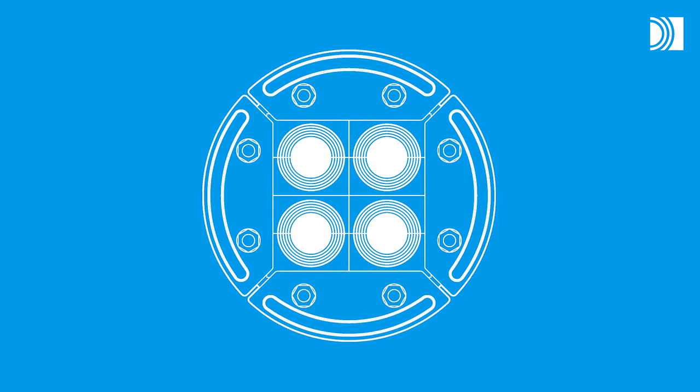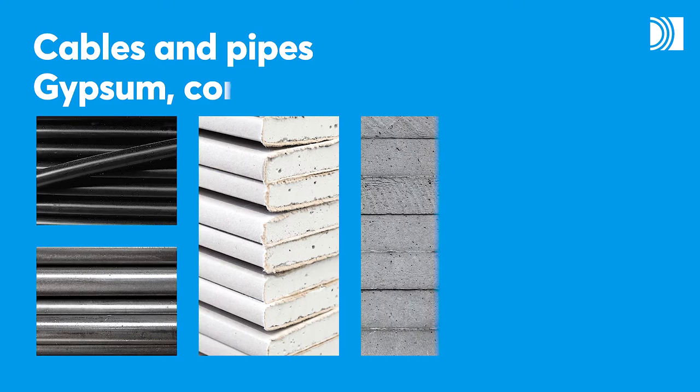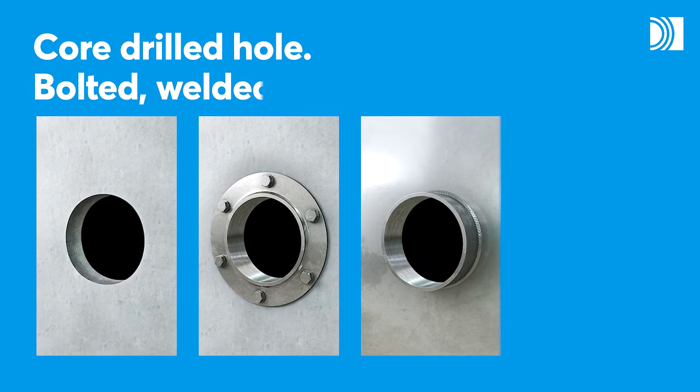With a Roxtec R Transit, you can seal openings for both cables and pipes in different structures such as gypsum, concrete and steel. You can install it in a core-drilled hole or a bolted, welded or cast-in sleeve.